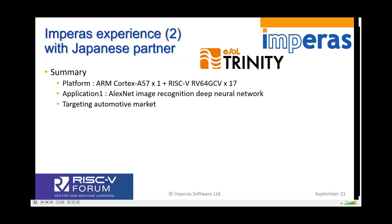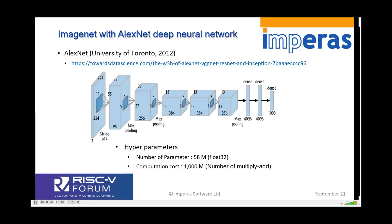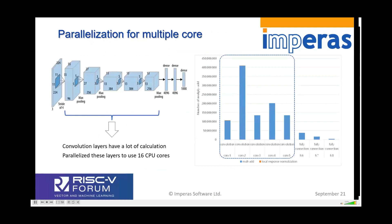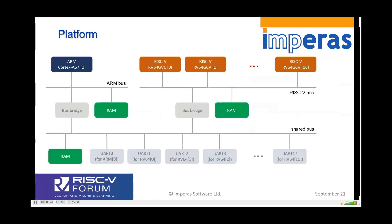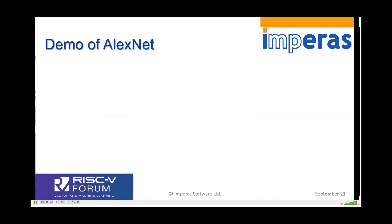Here's another example in more detail. This is a 16-core design with vectors and a control processor, plus an ARM as a housekeeping application processor. It's targeting automotive. The application is AlexNet image recognition deep neural network, which has billions of multiplications and additions — a tremendous amount of computation. The convolution layers are parallelized across the different cores. They built a platform with multiple RISC-V cores, the ARM core, shared memory, local memory, and UARTs to observe what's happening inside the design.